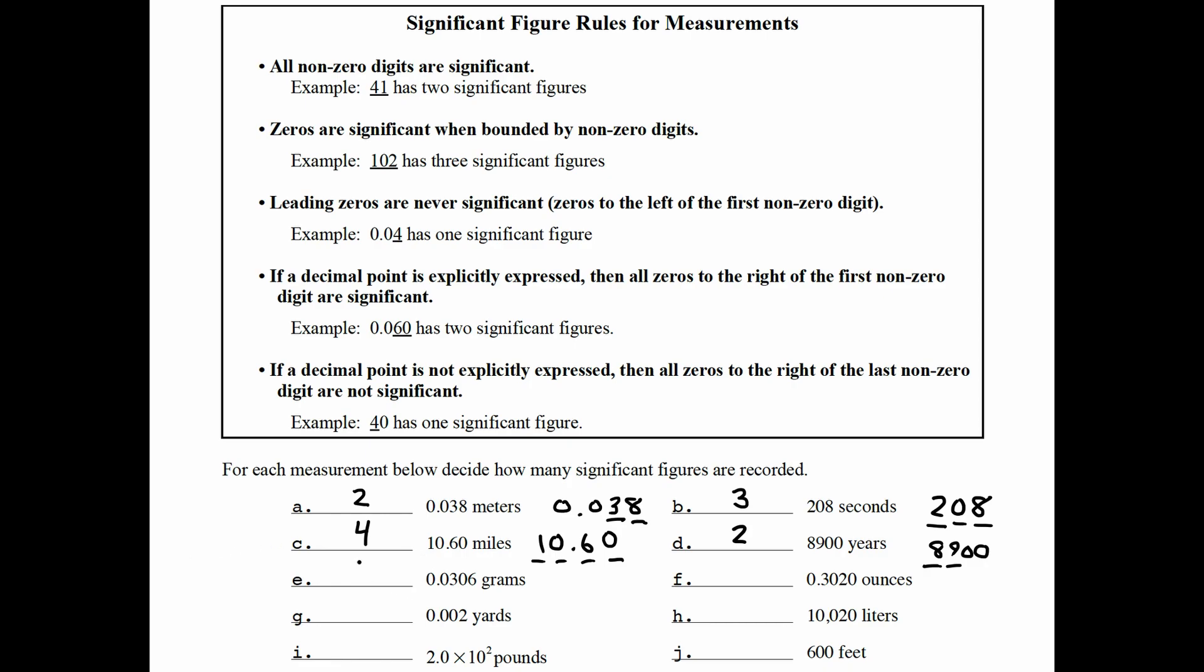0.0306 has three sig figs. 0.3020 has four because the trailing zero there was put there on purpose, meaning it must have been an estimated digit. 0.002 has just one sig fig.